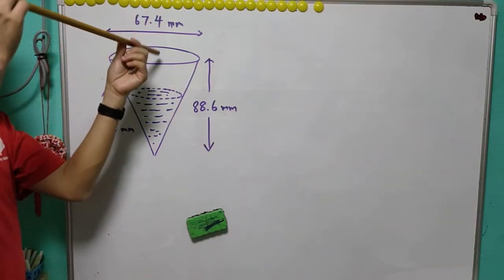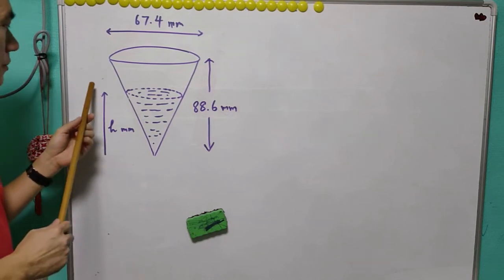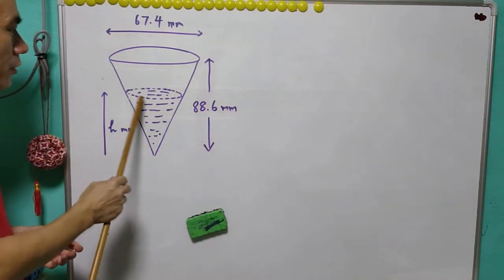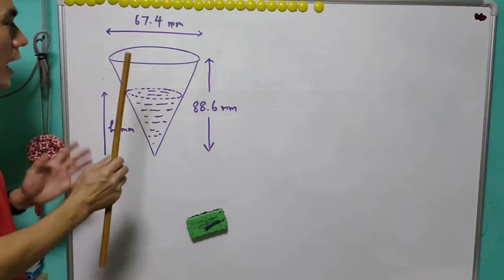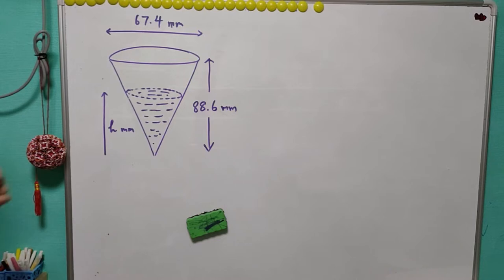Now we are going to pour water into this paper cup until h millimeter. Suppose the volume of the water is half of the volume of this paper cup. What is this value of h?